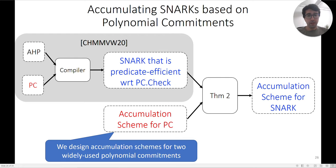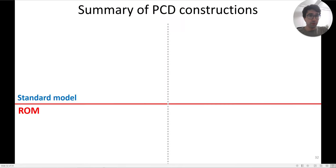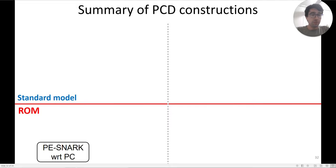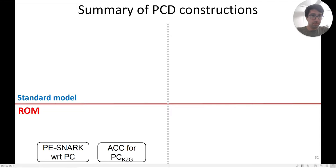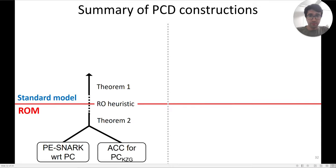We design accumulation schemes for two widely-used polynomial commitments with different properties. These yield, in a heuristic sense, two interesting new PCD constructions. The first one: you start with a predicate-efficient SNARK with respect to a PC scheme of your choice, and add an accumulation scheme for the KZG commitment, then apply the chain of theorems and heuristics.